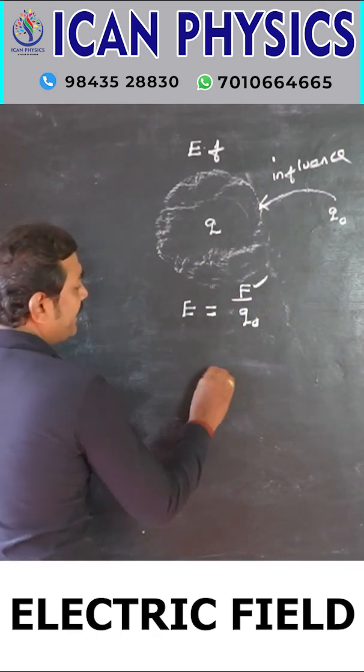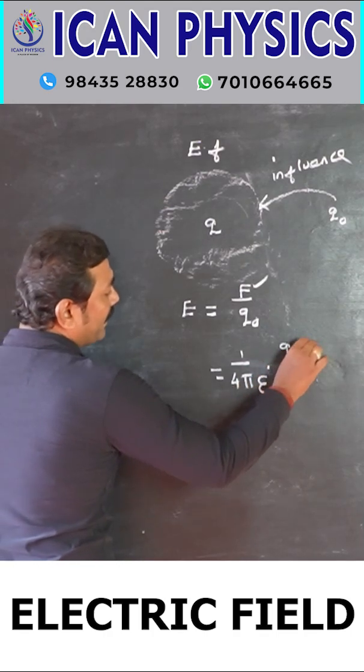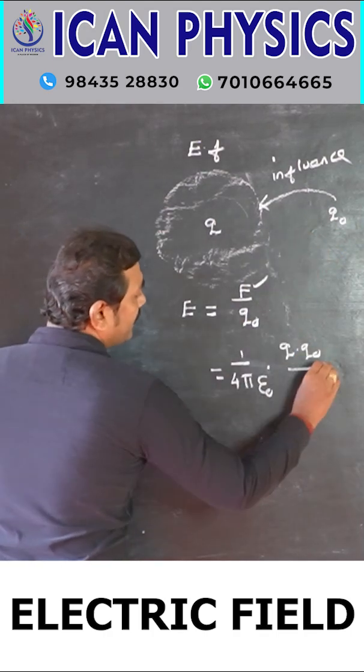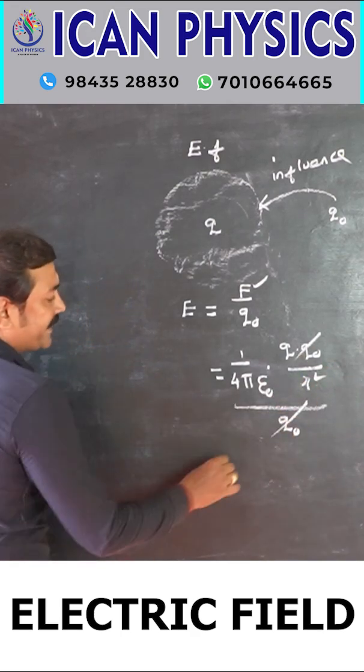So how we can write force? 1 by 4 pi epsilon 0, Q1 Q0 and R squared, divided by Q0. Q0, Q0 getting cancelled.